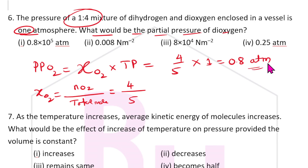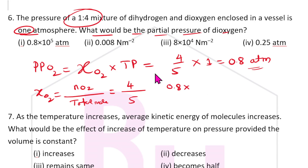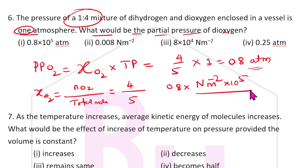Converting 0.8 atmosphere: since 1 atmosphere = 10⁵ N/m², the partial pressure of O₂ = 0.8 × 10⁵ N/m². The answer for this question is option C.